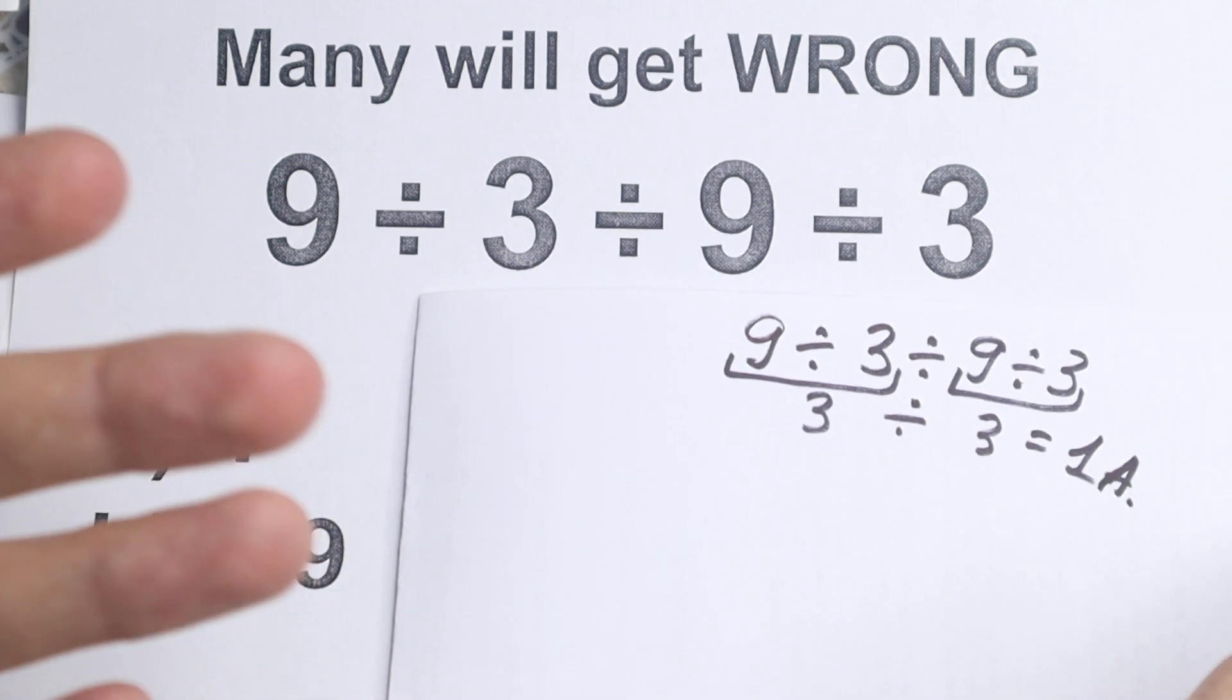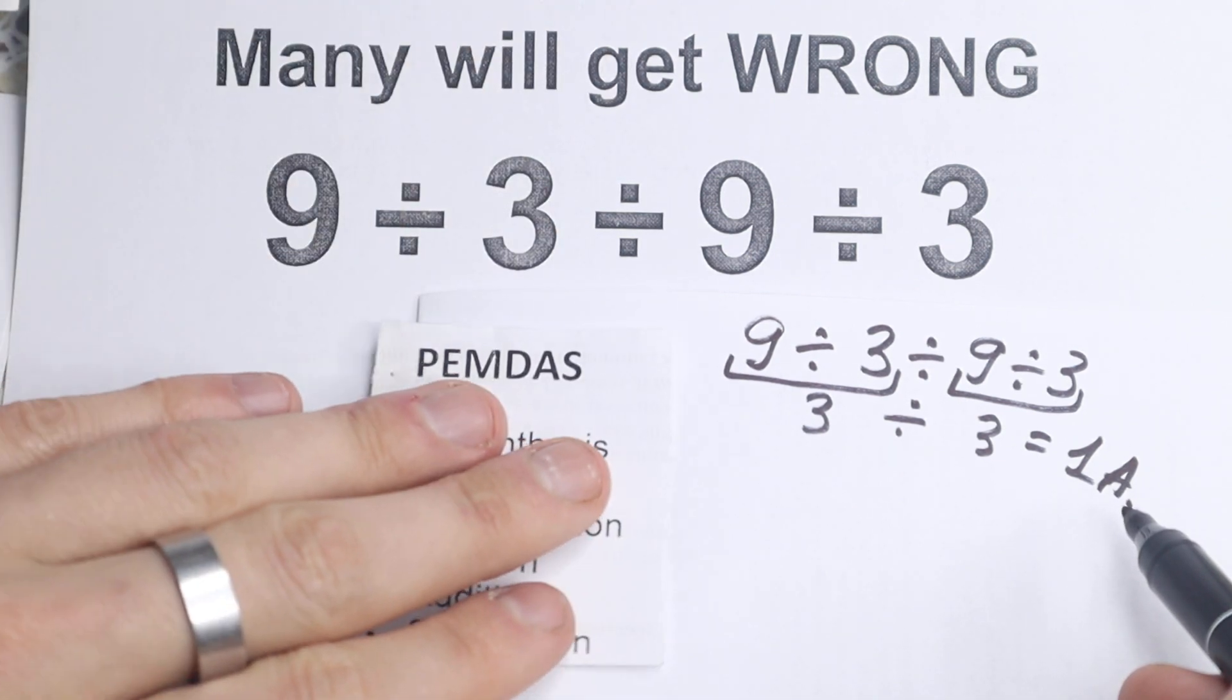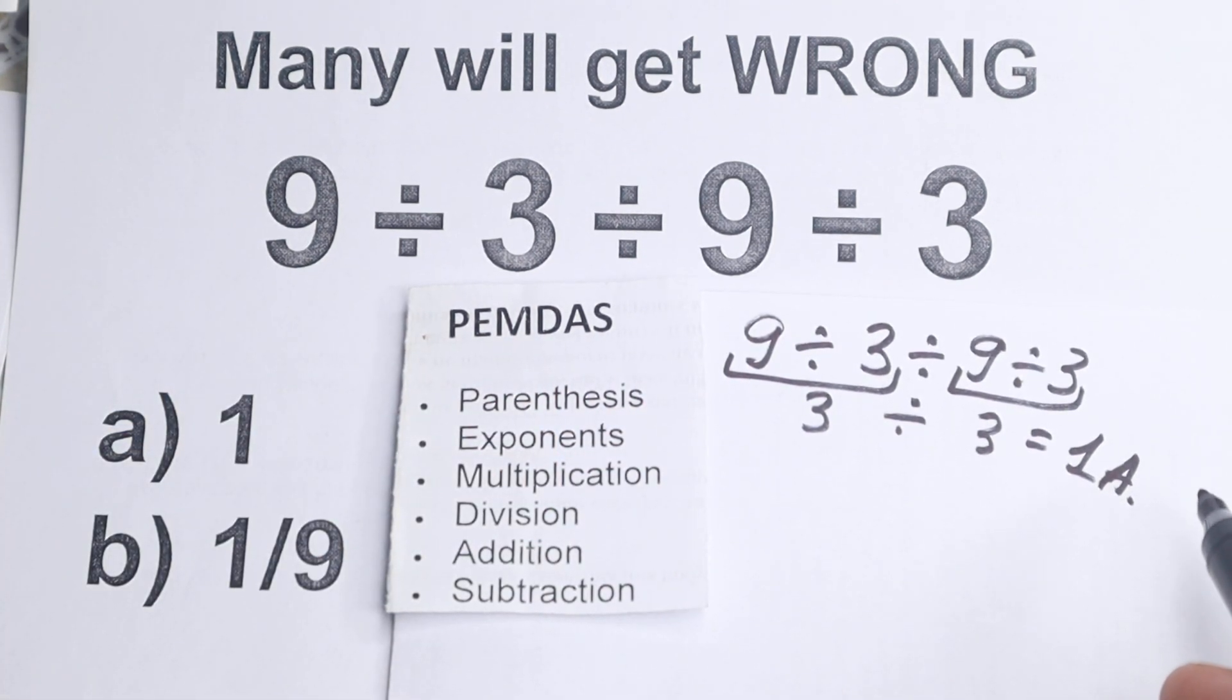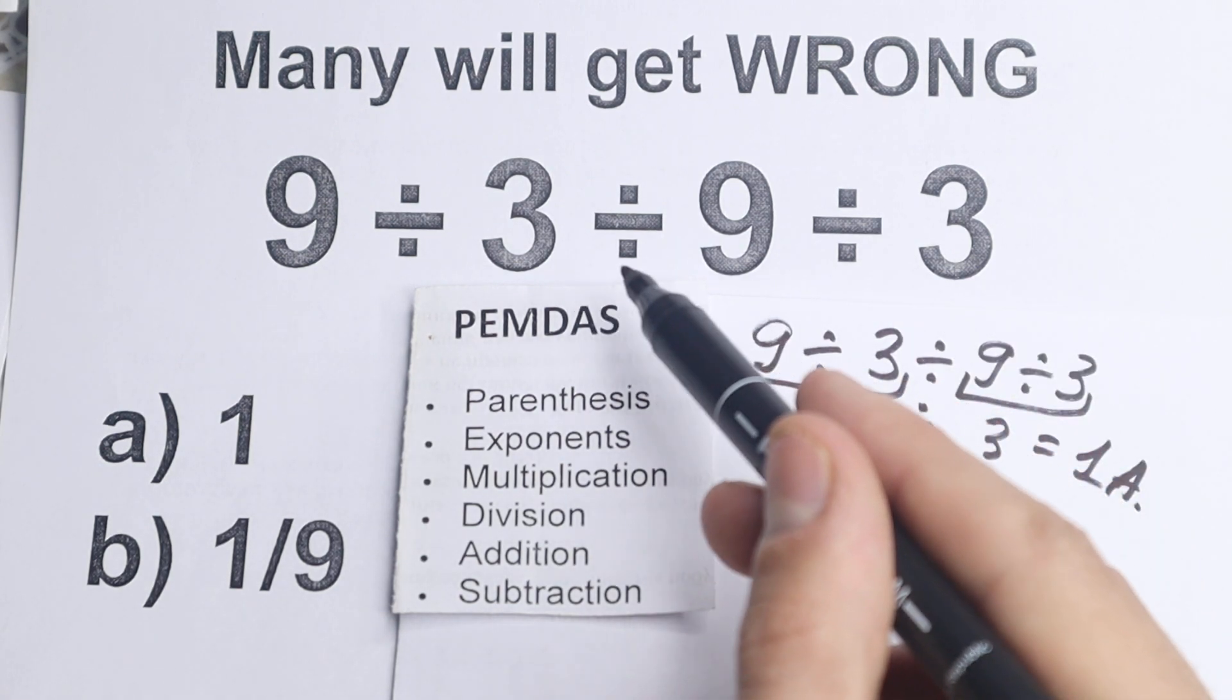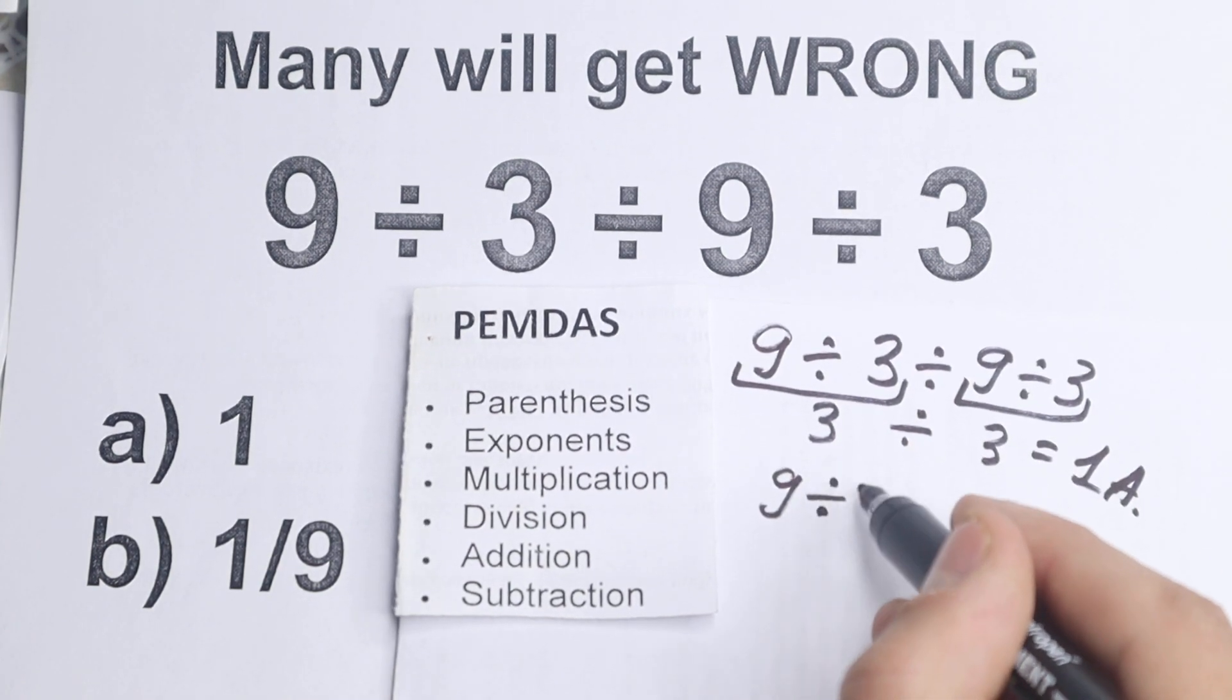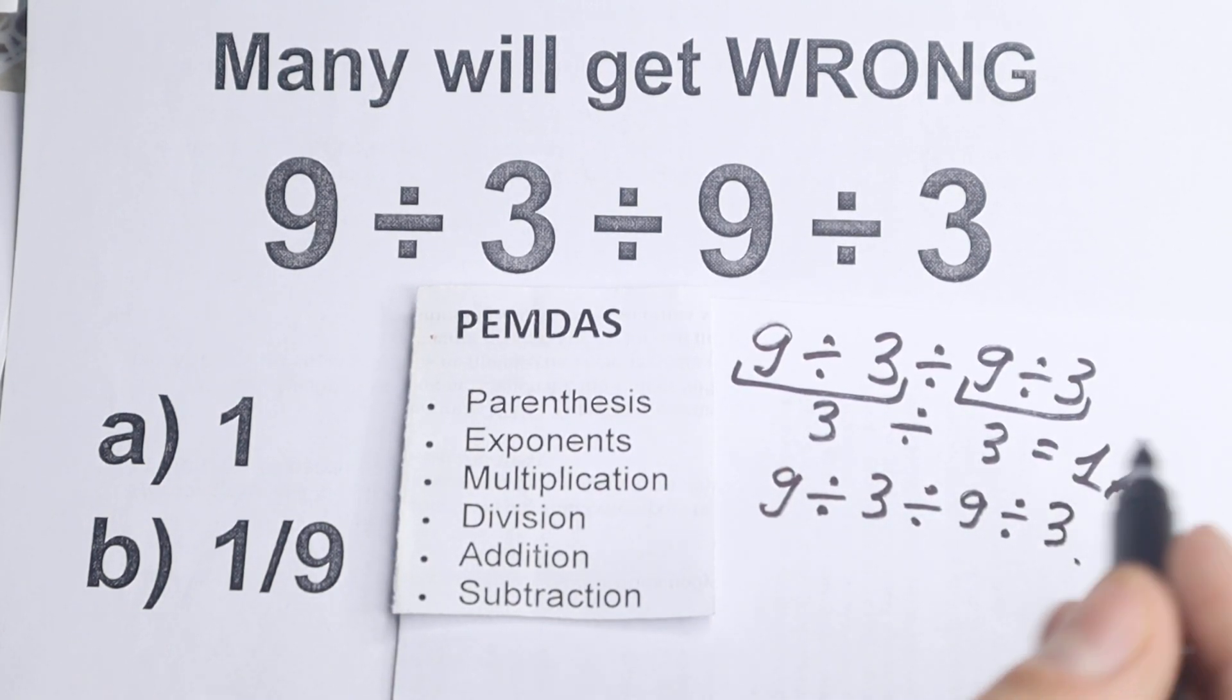But what is the correct answer? Because obviously whatever order we select is going to create a different answer, right? So we need to understand what is the correct order to solve this problem. This is our PEMDAS order, and we need to understand what is the correct order, because this is the main popular order in the world and we work according to this PEMDAS. I rewrite this problem. As you can see, this order works from the top to the bottom.